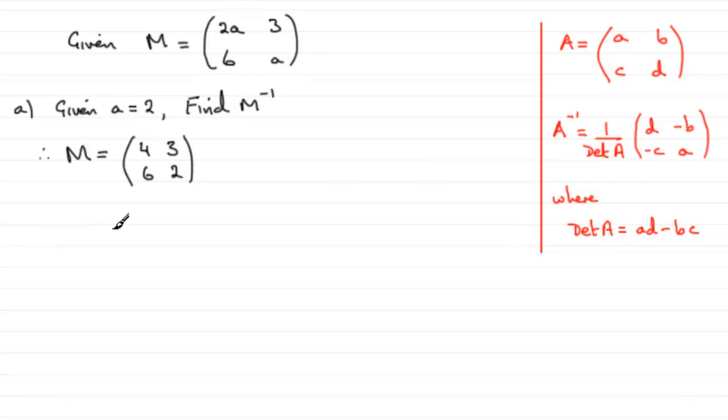So applying that rule then, let's first of all find the determinant of M. The determinant of M will be 4 times 2 minus 6 times 3. So we end up with 8 minus 18, so that's going to be minus 10.